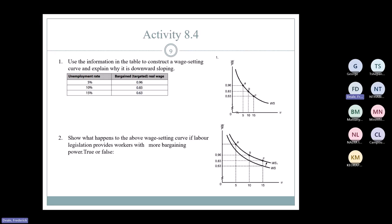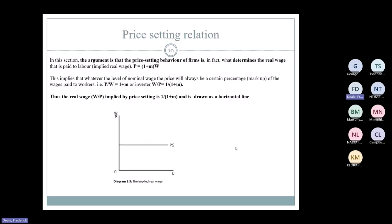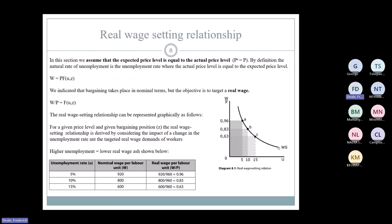In economics, you can often think your way through questions logically. If your bargaining position increases, should you get a higher or lower wage? Higher — at that given level of unemployment. If your bargaining position worsens, it would shift the curve down and to the left. The WS curve is really the first curve in this labor market model.